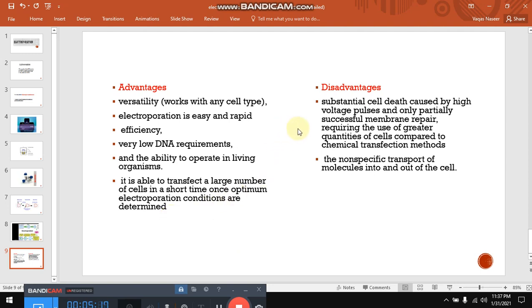But there are certain disadvantages of this method as well. Substantial cell death caused by the high voltage application. And only partially successful membrane reseals. That's why it requires the use of greater quantities of cells compared to the chemical transfection method. And the disadvantage is that it is a non-specific transport of molecules into and out of the cell.